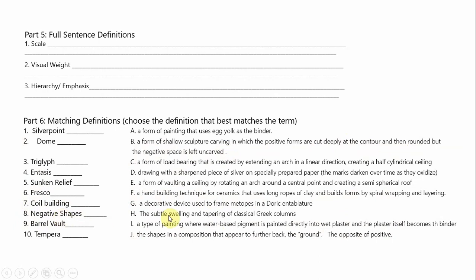Eight, negative shapes, is J — the shapes in a composition that appear further back, the ground, the opposite of positive. Barrel vault, nine, is a form of load-bearing created by extending an arch in a linear direction, creating a half-cylindrical ceiling. Tempera, ten, is A — a form of painting that uses egg yolk as a binder.